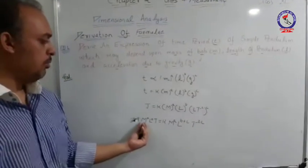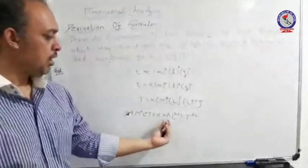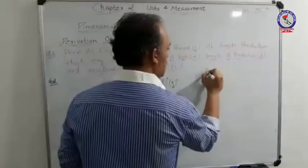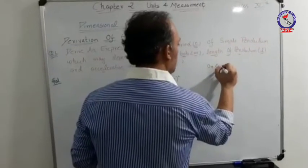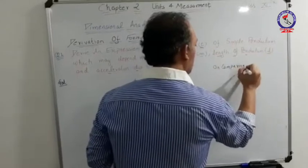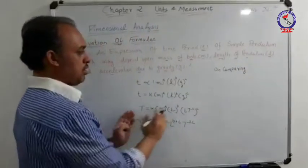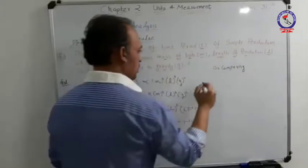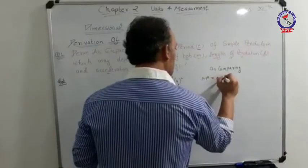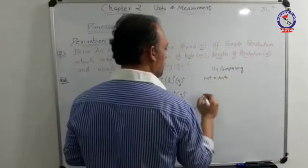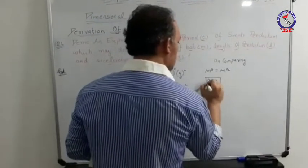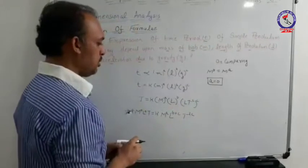Now comparing the parameters on LHS and RHS term by term. For mass: M to the power 0 on the LHS equals M to the power A on the RHS. Therefore, comparing dimensions of mass, A is equal to 0.